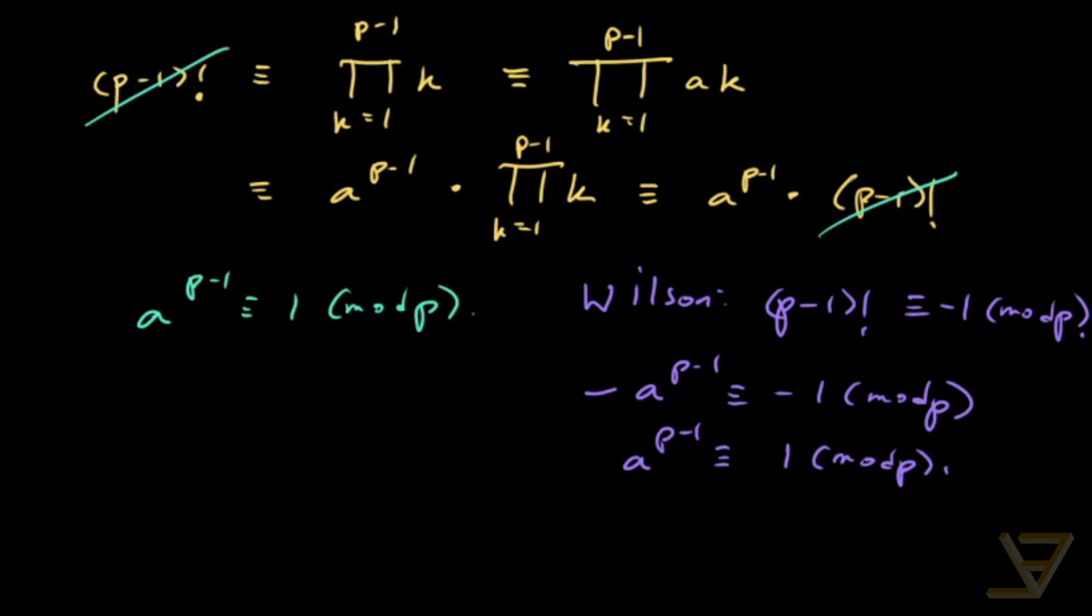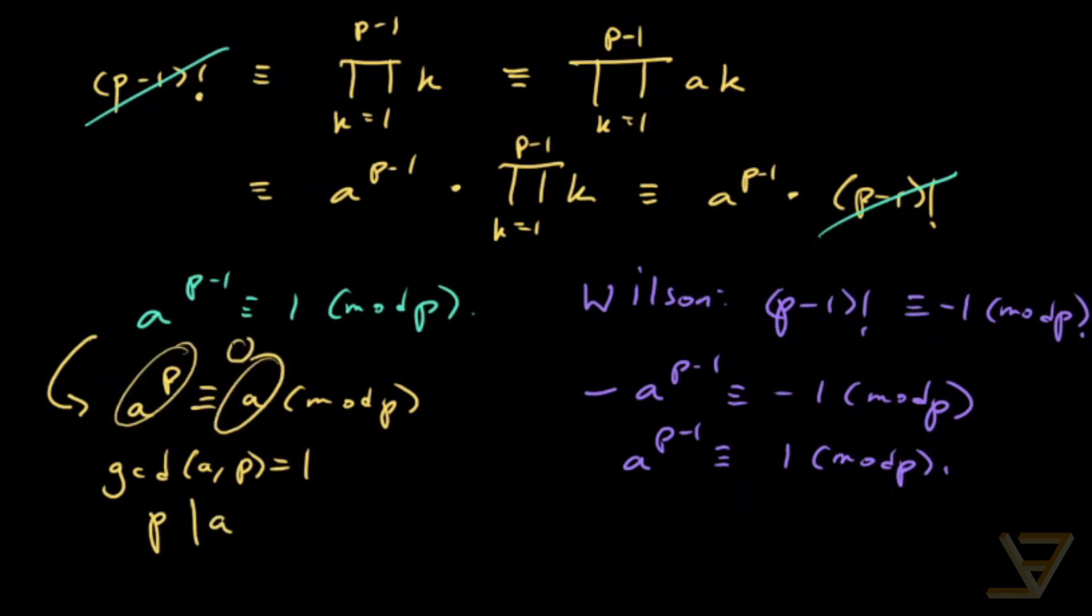And the last thing that I want to mention is that we can multiply both sides by a to get a to the p is congruent to a mod p. And this is not just true if gcd of a and p is equal to 1. This is true even if p divides a, because then both sides are just 0.